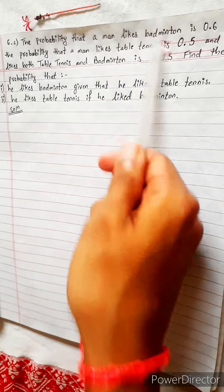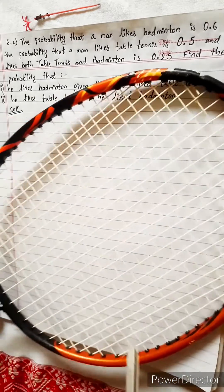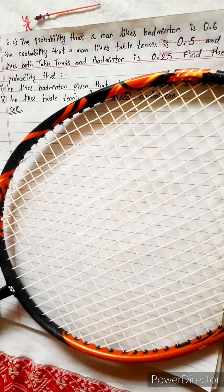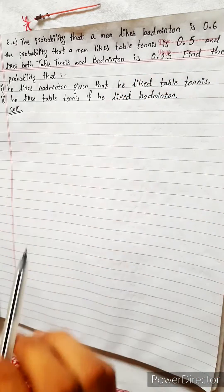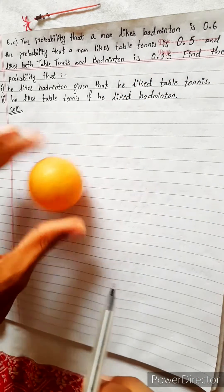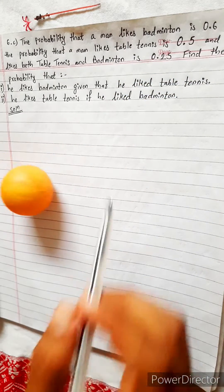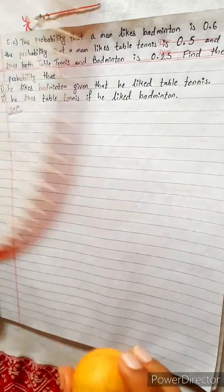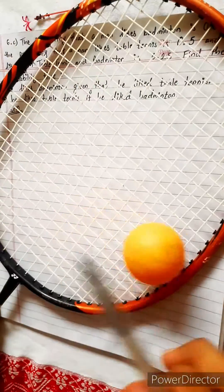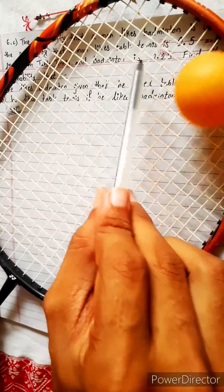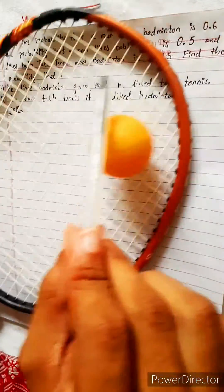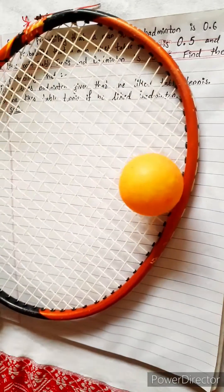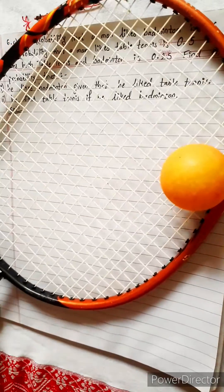The probability that a man likes badminton is 0.6, the probability that a man likes table tennis is 0.5, and he likes both table tennis and badminton is 0.25. Find the probability that he likes badminton given that he likes table tennis.